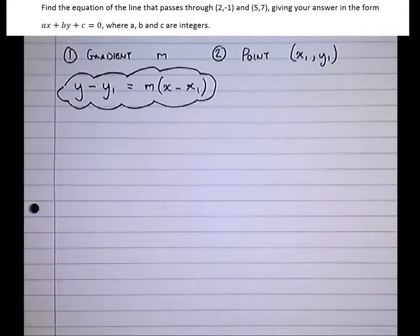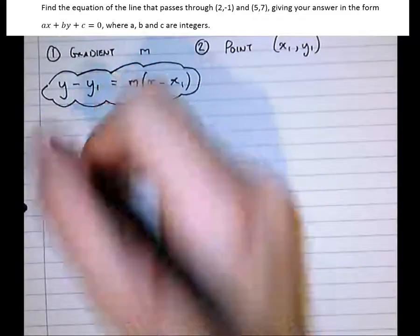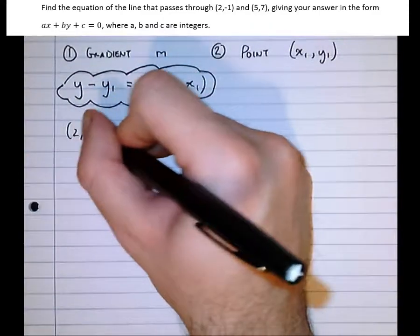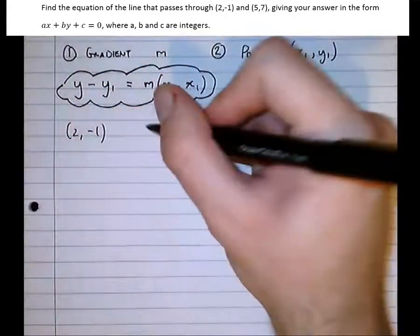So let's have a look at the question. Find the equation of a line that passes through (2,-1) and (5,7).